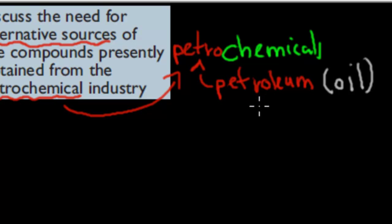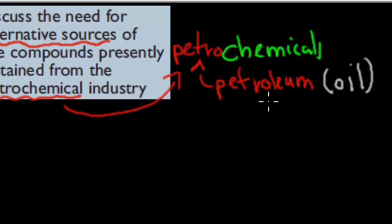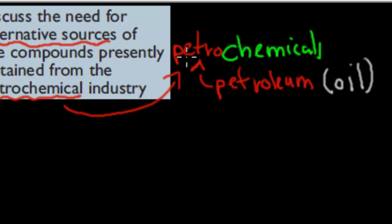For example, we are making plastics, ethanol, petrol — all those kinds of chemicals — making them from petroleum. Why do we need to have an alternative? To discuss the need for an alternative source to making these petrochemicals.